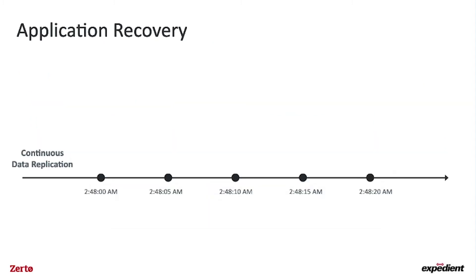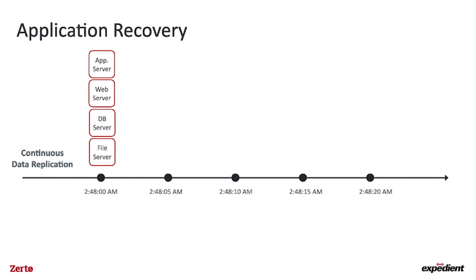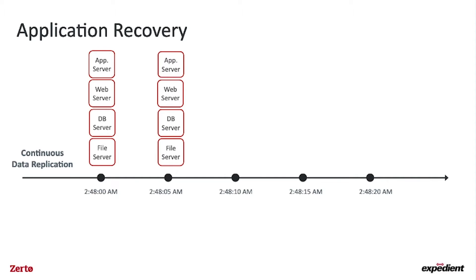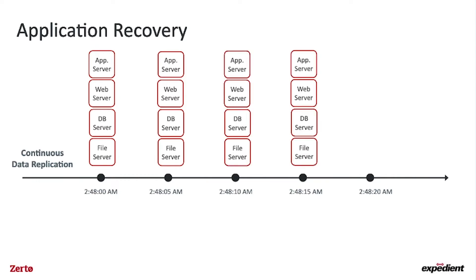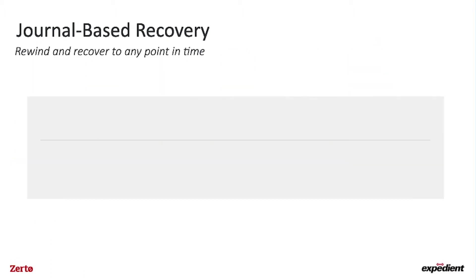To solve this, Zerto provides what we call Virtual Protection Groups, which allow you to group your VMs together so they are protected to the exact same point in time. When you recover to one of our points in time, you're recovering that entire application to the exact same point in time — no need to fight to get them into a consistent state. This makes recovery time much lower, and we do this for every checkpoint we create in our journal.